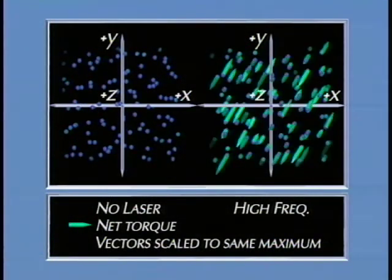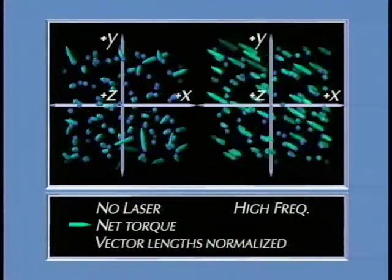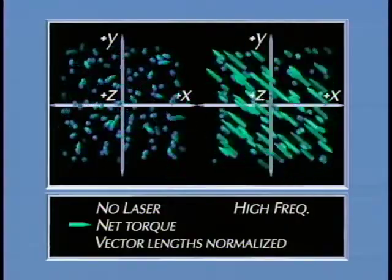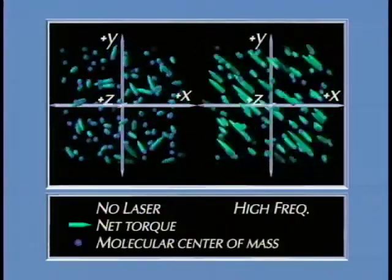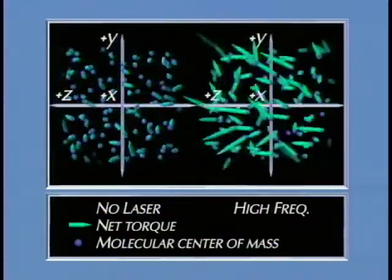In each vector animation, we show the molecular ensembles first from the point of view of the laser, that is, looking down the z-axis. During the animation, the lab frame is rotated 90 degrees to show the ensembles from the side. From this point of view, the laser is propagating across the width of your screen.